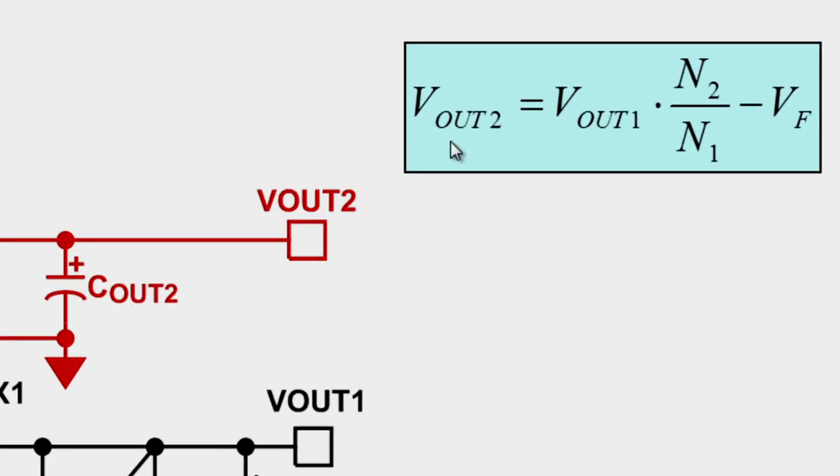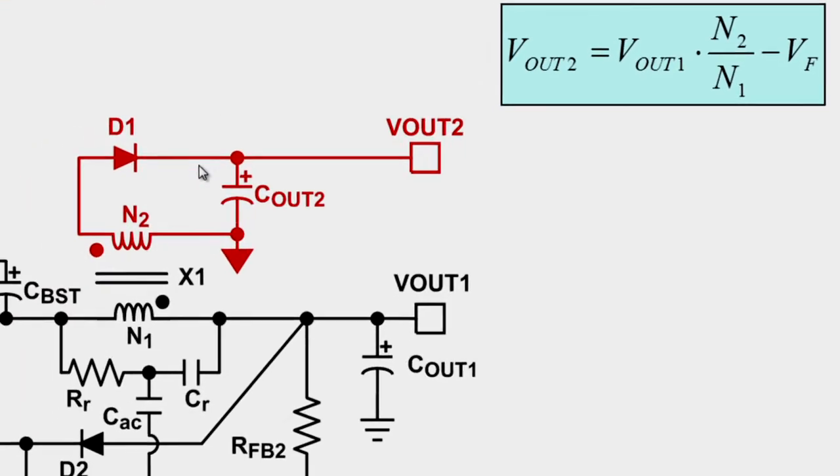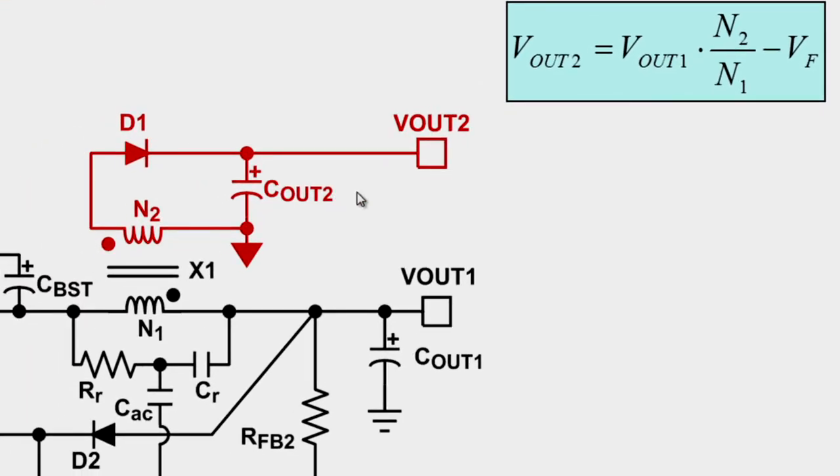The secondary output, Vout2, is related to the primary output voltage by the transformer turns ratio, and there is a term for diode drop D1.